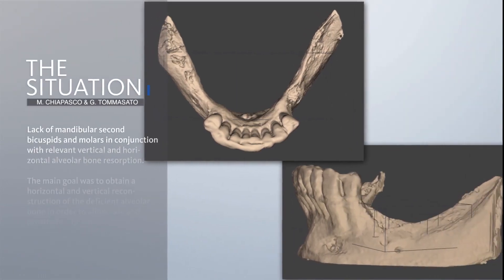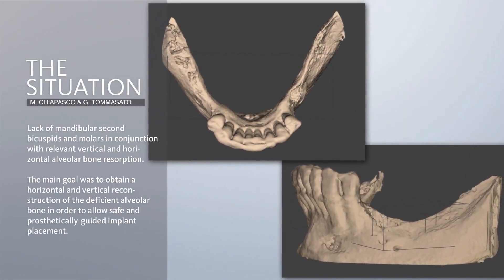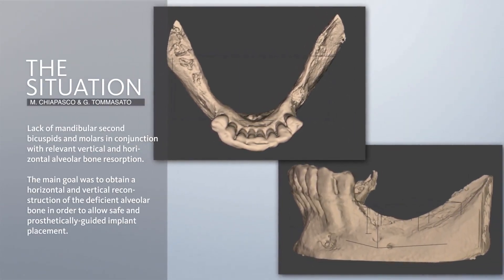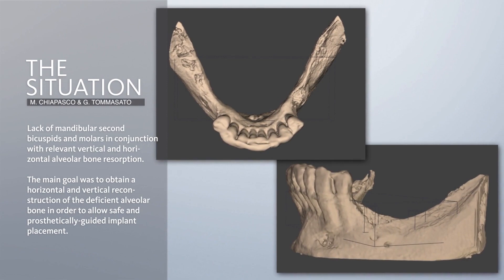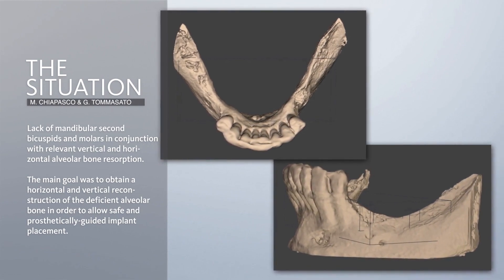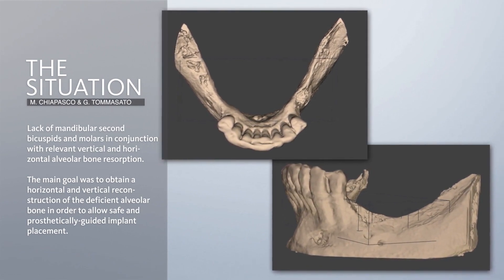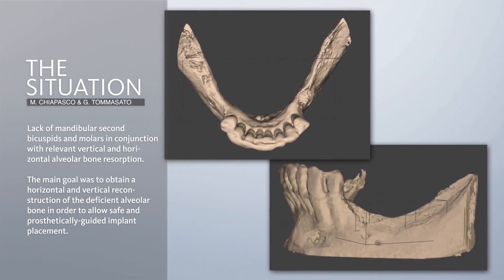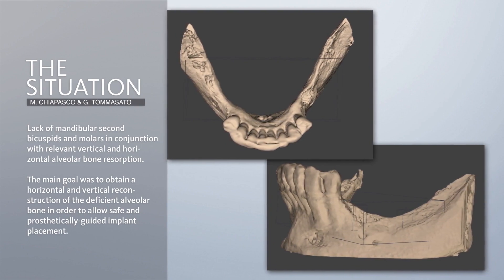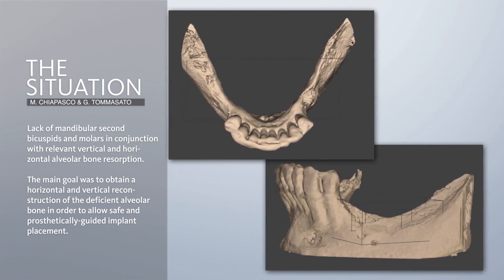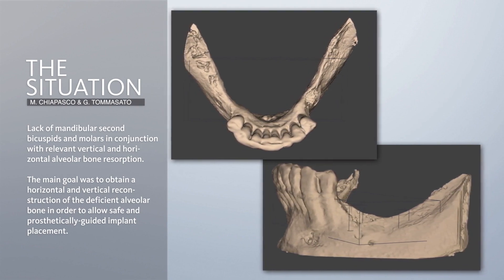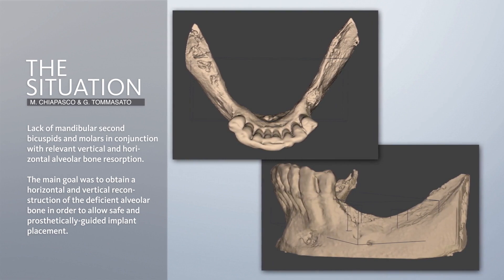From the CT scans, here you can see very well the vertical and horizontal resorption on both sides, left and right, with no chance to place implants without regenerating the bone in advance.